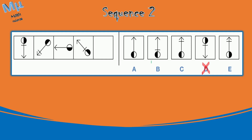Looking more closely, the colors of the ball are changing. The ball alternates: white and black shift to black and white, then to white and black again. So the pattern is: white-black, black-white, white-black, black-white. The next step should be white-black. In option E you have black-white, which is the opposite.